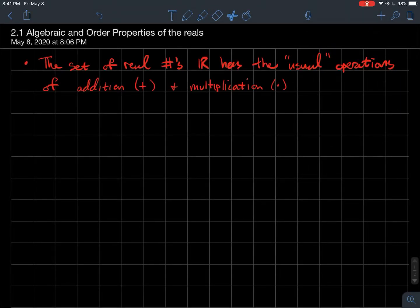This is a short video about algebraic and order properties of the real numbers. The set of real numbers will denote it by this bold-faced R here. It's got your usual operations of addition and multiplication, so like how you learn to add and multiply numbers, and for that matter subtract and divide since negative numbers are real too. Those are all fair game here for this class.